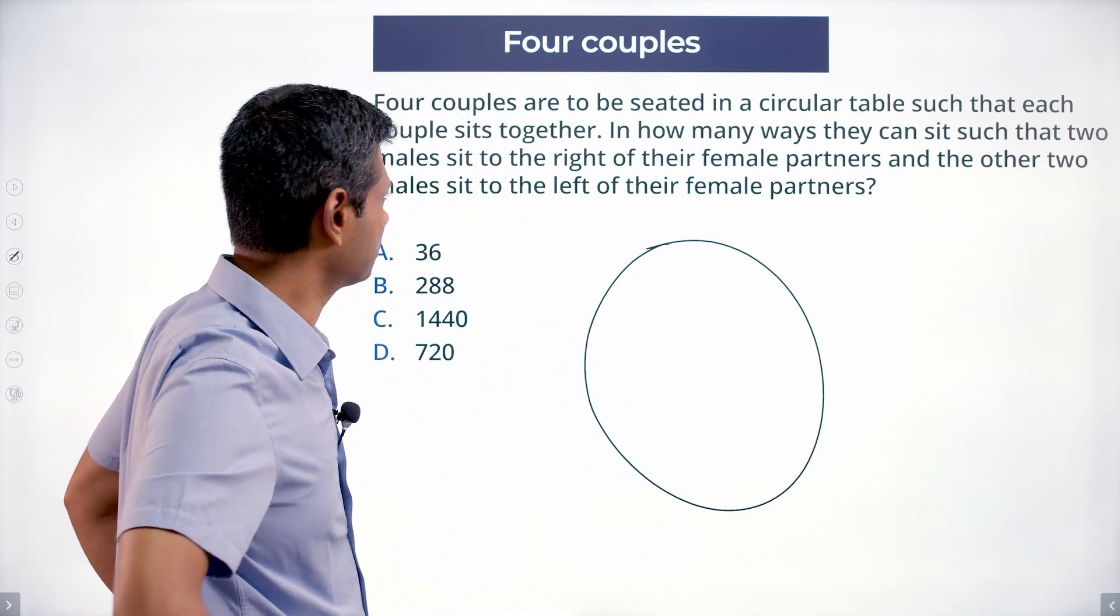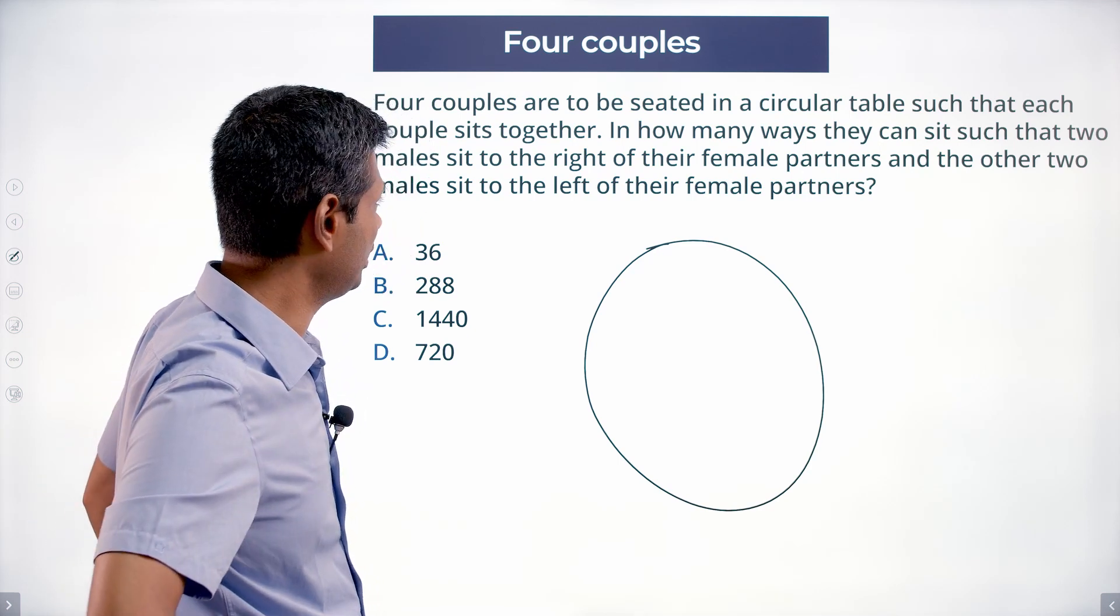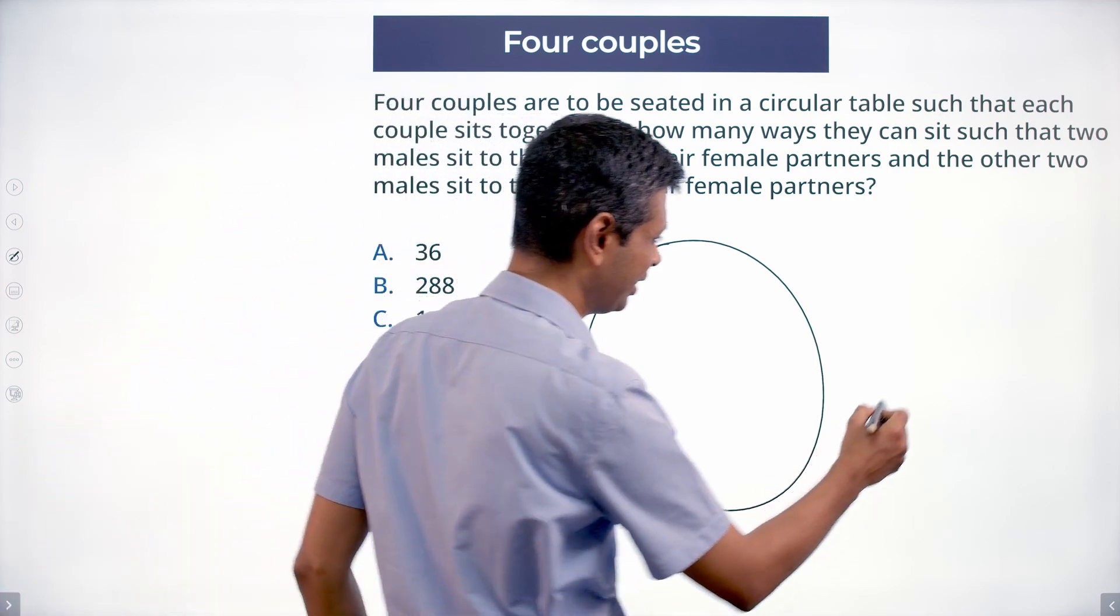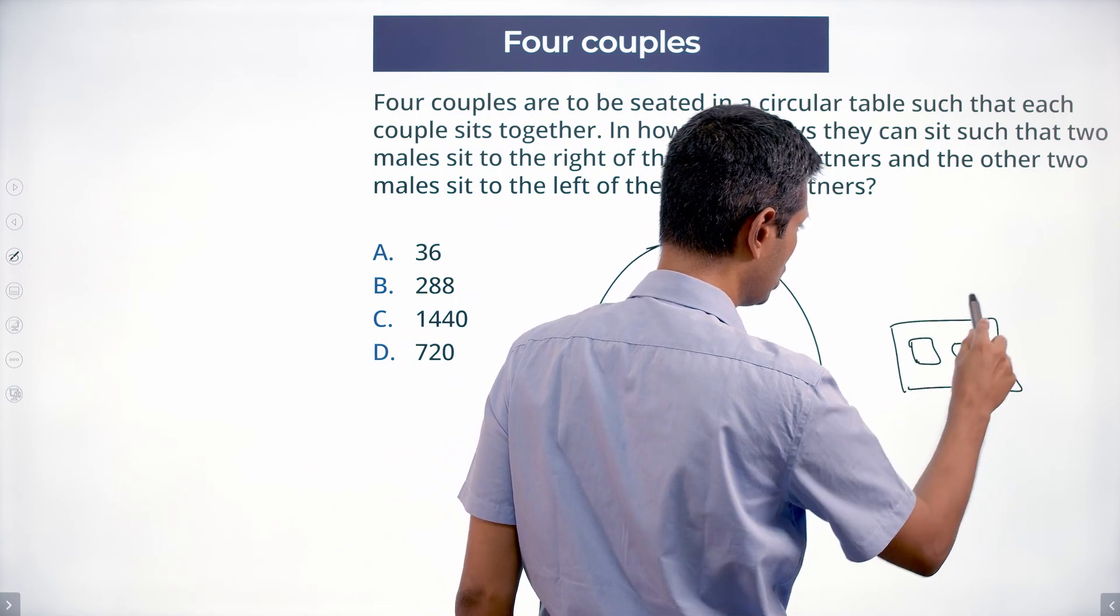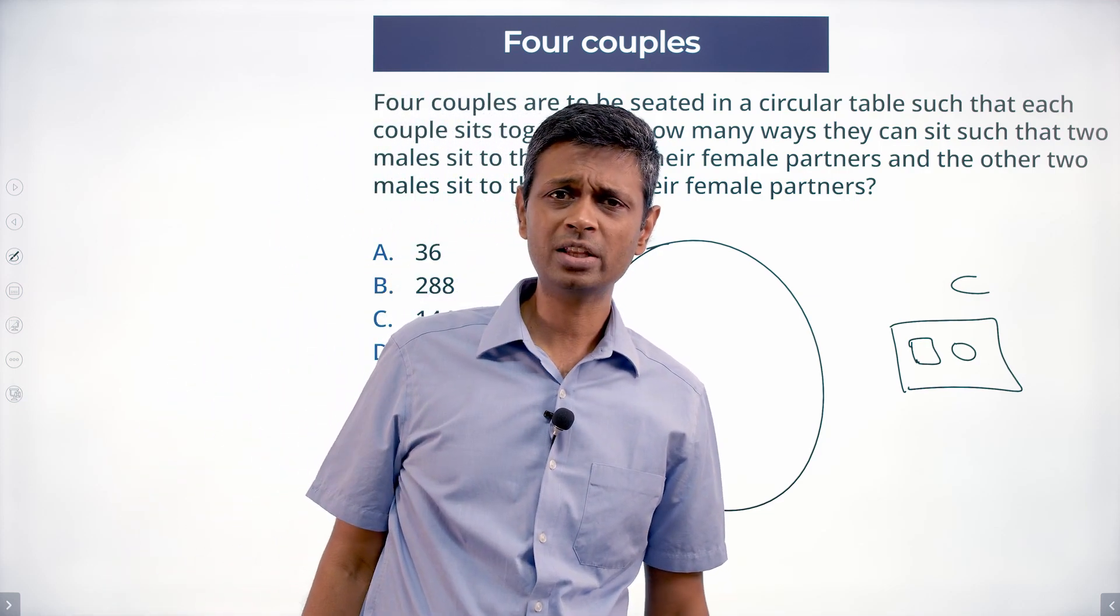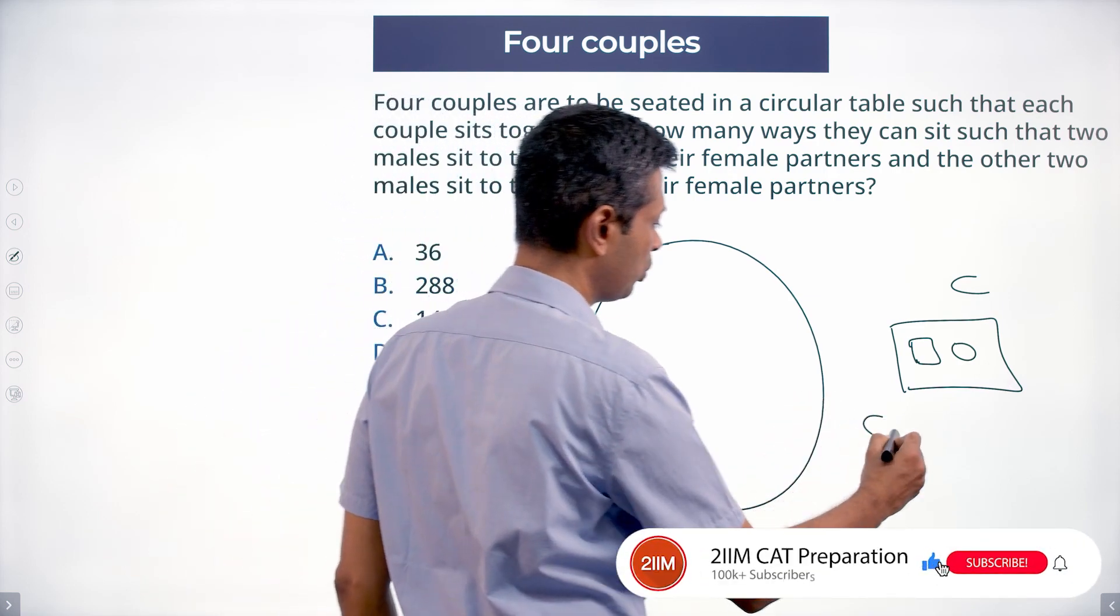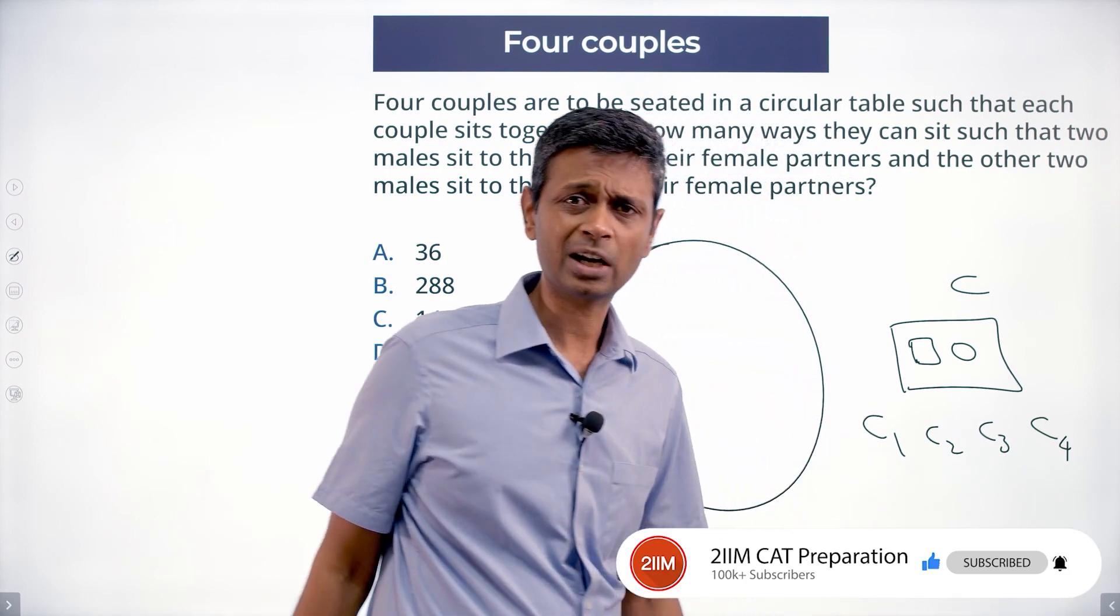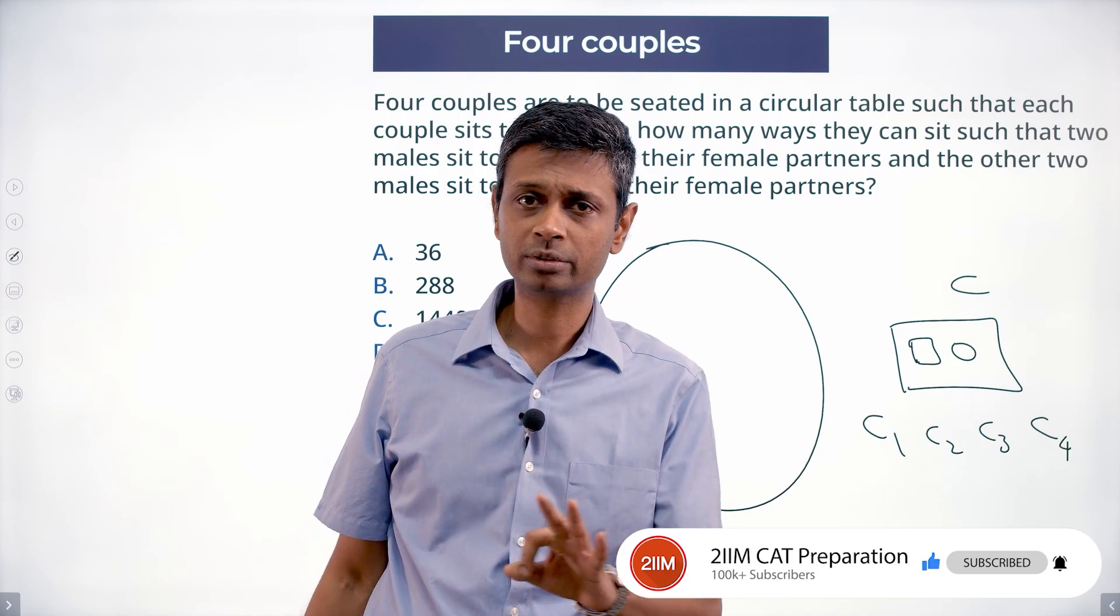You've got to put the couples together. Two males sit to the right of their female partner and the other two males sit to the left of their female partner. What I'm going to do is I'm going to create a double seat and call it a couple seat. So I'm going to take this double seat and call that a couple seat and put four couple seats here: C1, C2, C3, C4 around a circle. In how many ways can it be done? Four units around a circle, three factorial ways. Done.